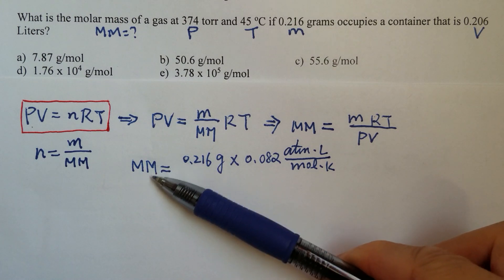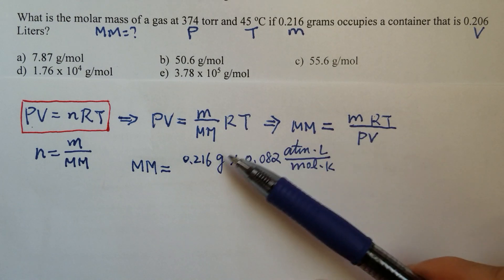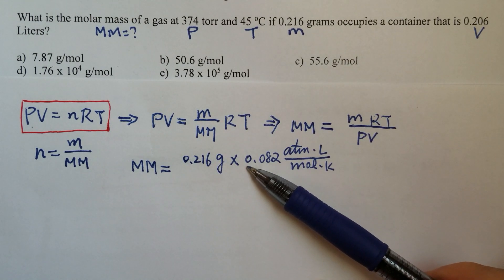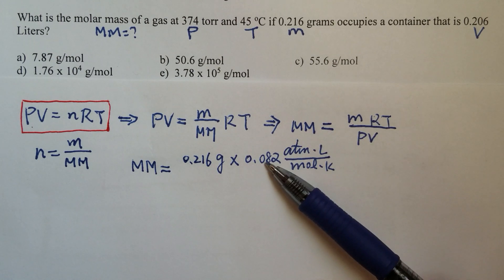Molar mass equals 0.216 grams times R, the gas constant, 0.082 atmosphere liters over mole Kelvin.